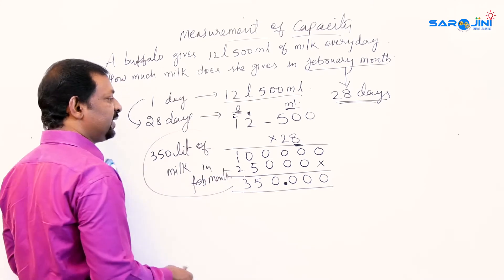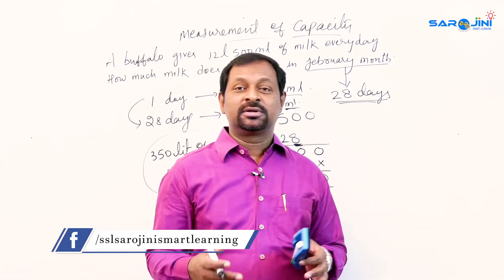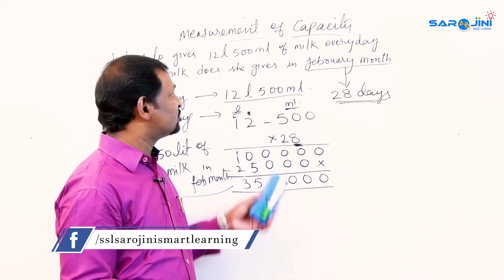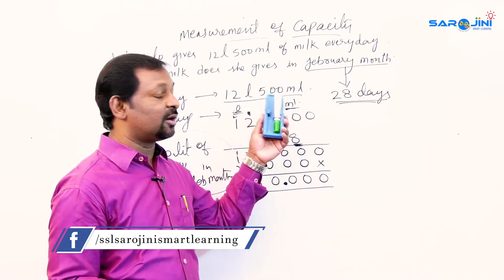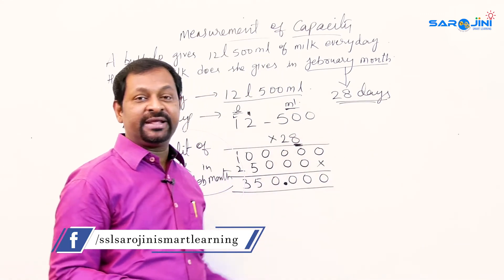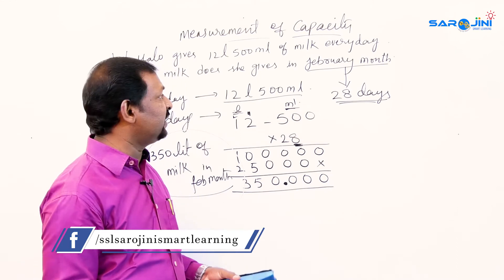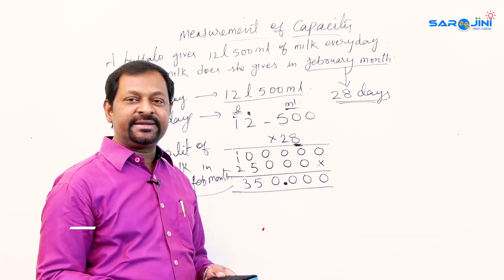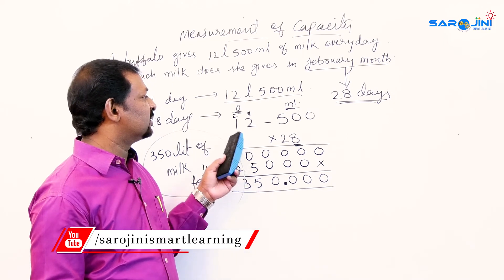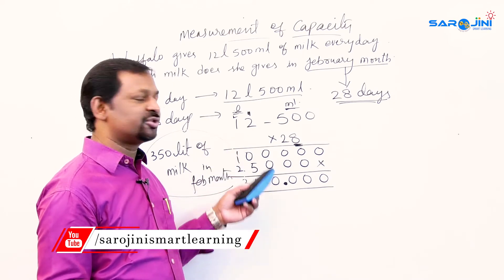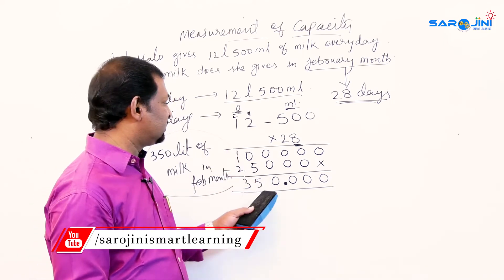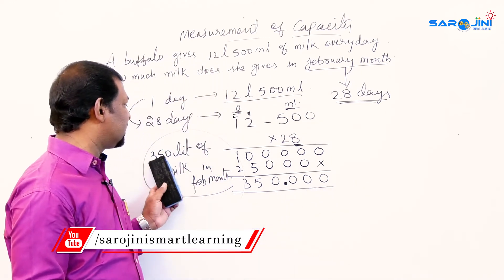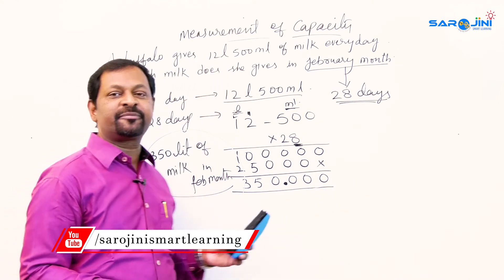So by using multiplication we can find the total. We check how many days to multiply by — February has 28 days, so we multiply the given quantity by 28. There are no milliliters left in the answer, so the buffalo gives exactly 350 liters of milk in February.